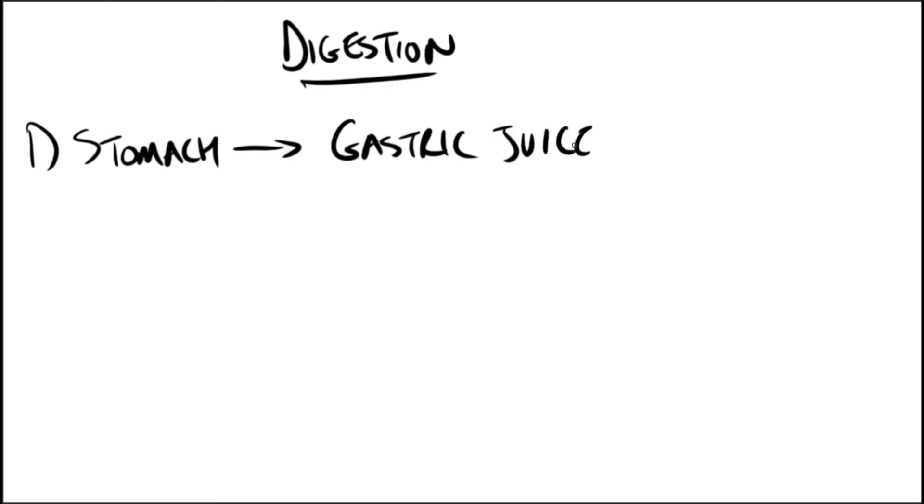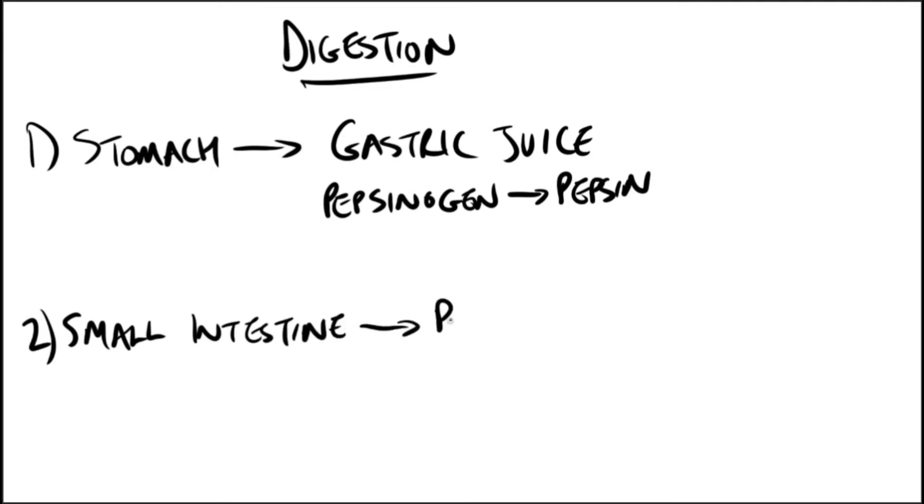On entering the small intestine, pancreatic proteases take over. The release and activation of the pancreatic zymogens is mediated by the secretion of cholecystokinin and secretin. These are two polypeptide hormones of the digestive tract.